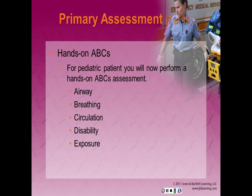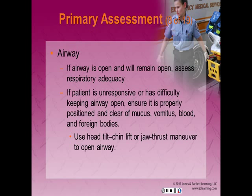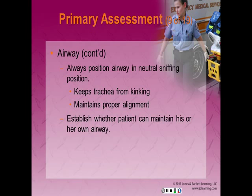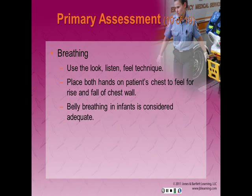Next, perform the hands-on ABC assessment, which includes airway, breathing, circulation, disability, and exposure. If the airway is open and patent and the patient can adequately maintain it, assess respiratory adequacy. If the patient is unresponsive or has difficulty maintaining the airway, ensure it is properly positioned and clear of mucus, vomitus, blood, and foreign bodies. If trauma is ruled out, use the head-tilt-chin lift; if trauma is suspected, use the jaw thrust. Always position the airway in the neutral sniffing position, which keeps the trachea from kinking and maintains proper alignment for spinal immobilization.